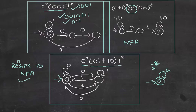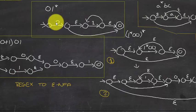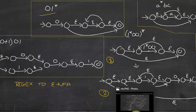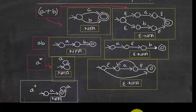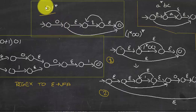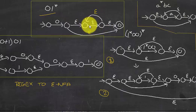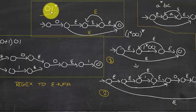Now let's look at converting regular expressions to epsilon-NFA. First example: 01*. Keep the rules handy if you're new to this. For just 0, you simply add a 0 transition. For 1*, you add epsilon at the beginning, epsilon at the end, an epsilon self-transition, and an epsilon going back — allowing multiple occurrences of 1.